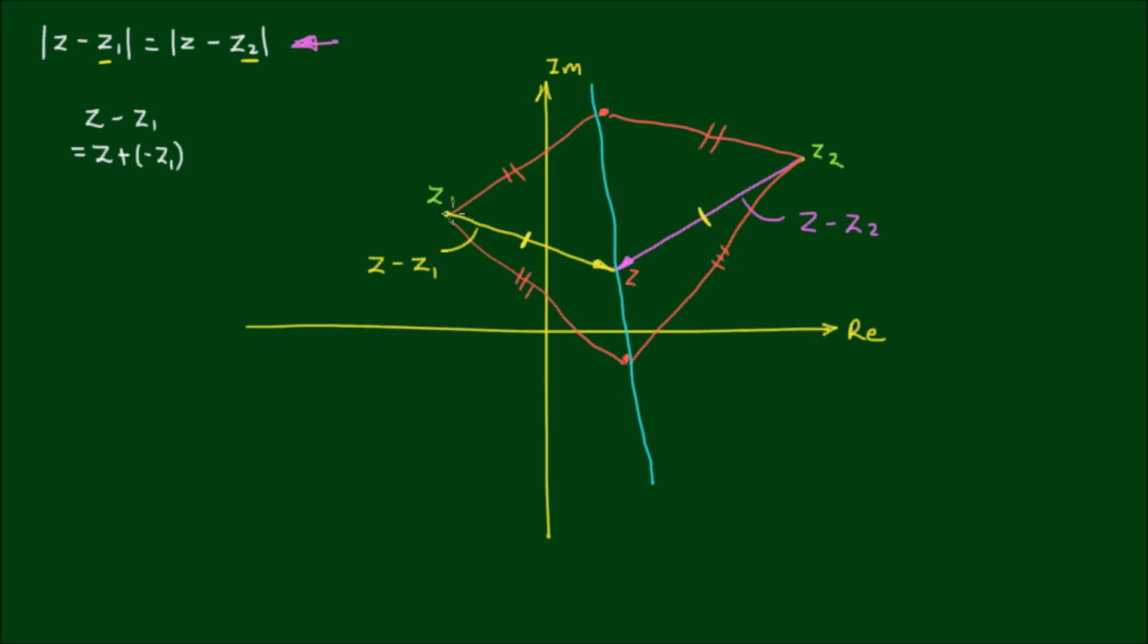And if I draw a straight line to connect these two points, the locus is perpendicular to this line. And it bisects the line that connects z₁ and z₂.